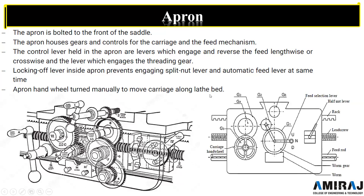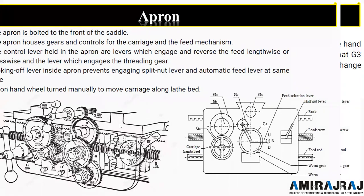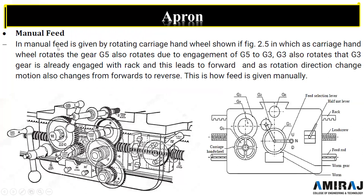Here is the apron hand wheel. It will turn manually to move the carriage along the lathe bed. Now, for manual feed: the feed is given by rotating the carriage hand wheel. Here is the carriage hand wheel — we have to rotate it. When the carriage hand wheel rotates, gear G5 also rotates due to the arrangement of G5 to G3.